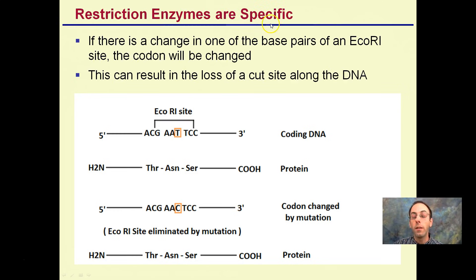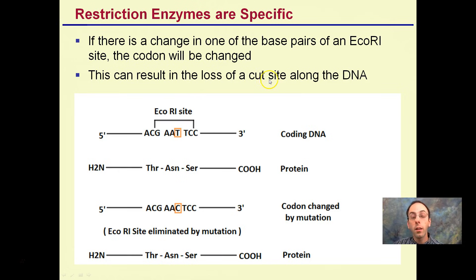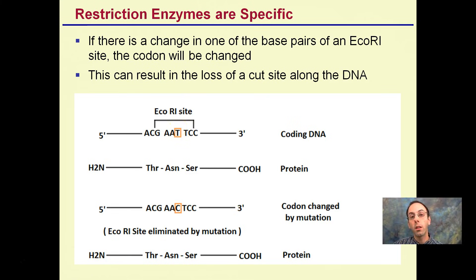Restriction enzymes are specific — this is an important fact. If there's a change in just one of the base pairs of an ECO-R1 site, the codon will be changed. This can result in the loss of a cut site along the DNA. These four to six bases, depending on the restriction enzyme, are looking for a very specific sequence. If you get a mutation in one of those bases, you may lose a cut site or generate a new cut site somewhere else along the DNA strand.